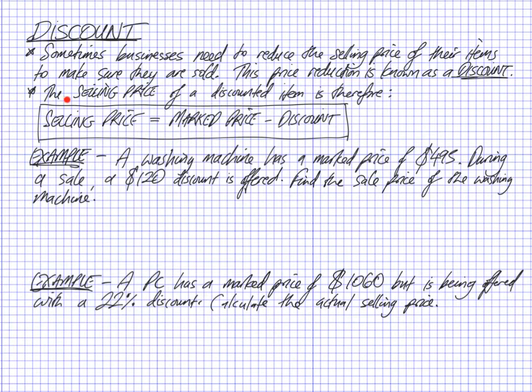Now the selling price of a discounted item, you work it out by using this formula: the selling price after discount is going to be the marked price, or the price it was before the discount, minus the discount. So that's easy to deal with, this formula, if you know just the discount as a number. So that's what this first example is going to be.